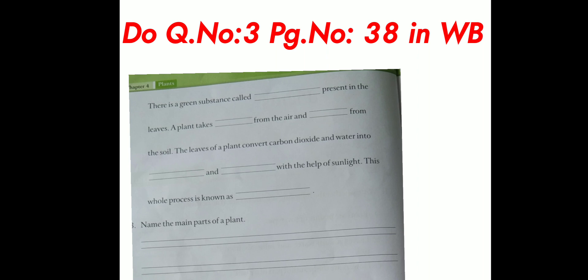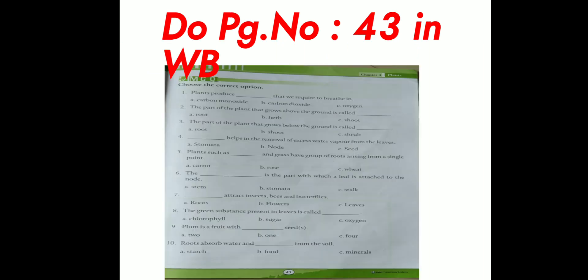Next question. Do question number 3 on page number 38 in workbook. The question is, name the main parts of a plant. Next question. Do page number 43 in workbook. That is MCQ questions. Choose the correct option.